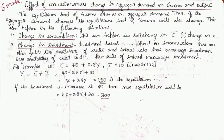Hello everyone, welcome back to CMAS Academy. In today's video, we are going to learn about the effect of an autonomous change in aggregate demand on income and output. This is one of the six marks questions from your chapter 4, income determination and employment from macroeconomics.